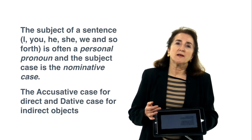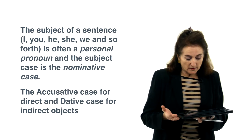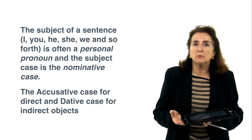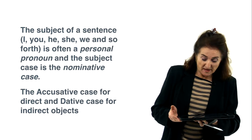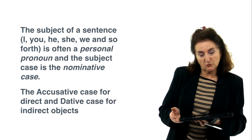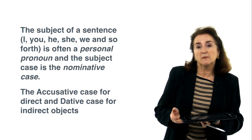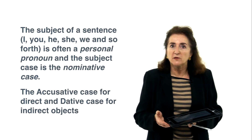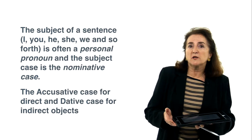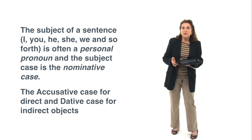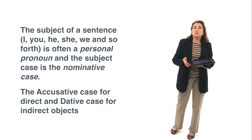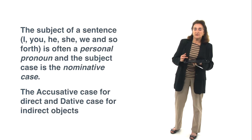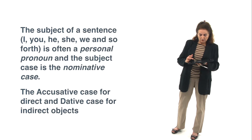Let's talk personal pronouns. As you know, the subject of a sentence is usually, or very often, a person, but it doesn't have to be. It can also be a personal pronoun, and the subject case you know already is always the nominative case. The accusative case is for direct objects, and the dative case for indirect sentence objects, and we'll get into that later on a bit more.